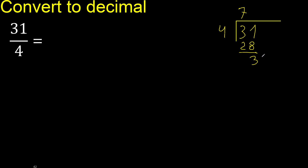There is no next number, therefore always complete with 0, with a point here. 0. Point. 30. 4 multiplied by 8 is greater. 4 multiplied by 7 is 28. 30 minus 28 is 2. Next.